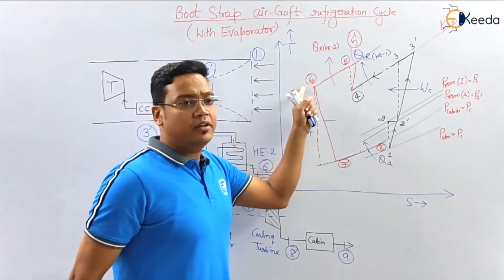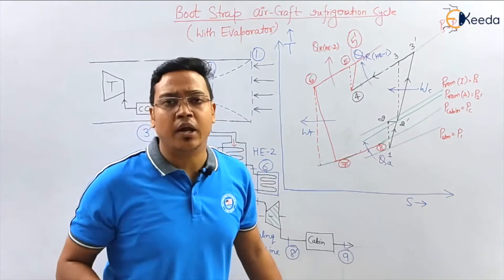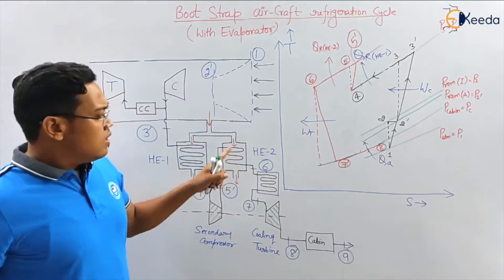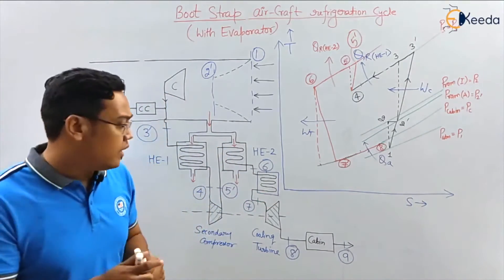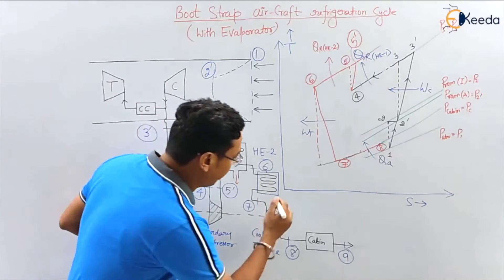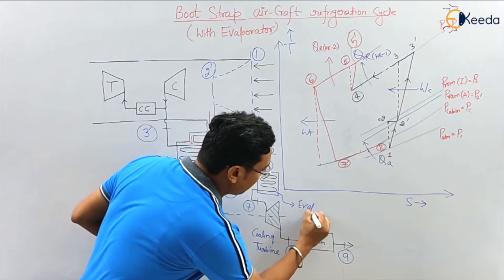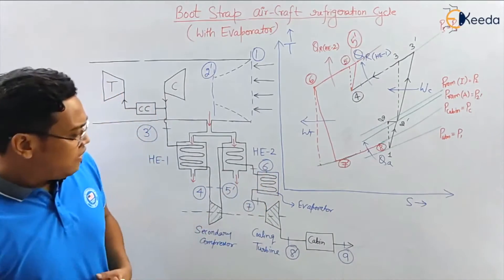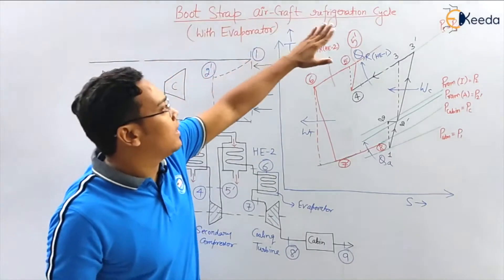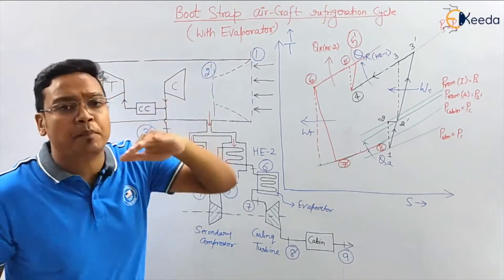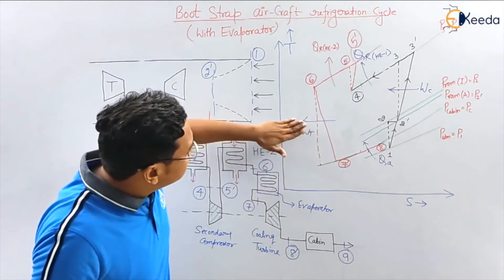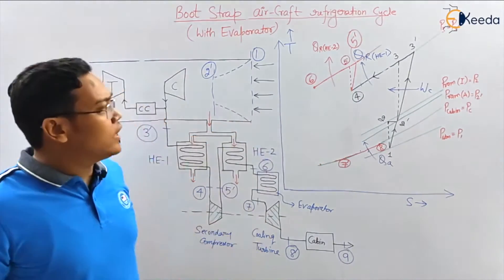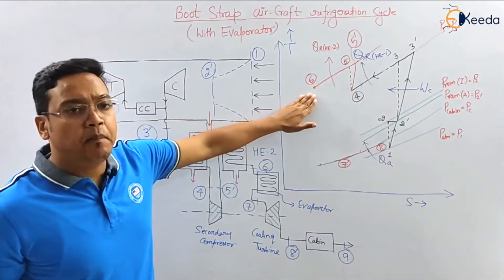Now from point number 6, the air will go to the evaporator. So after heat exchanger 2 and before the cooling turbine, we have placed the evaporator. This is what makes this cycle the bootstrap air refrigeration cycle with evaporator. The process is very clear up to point number 6.